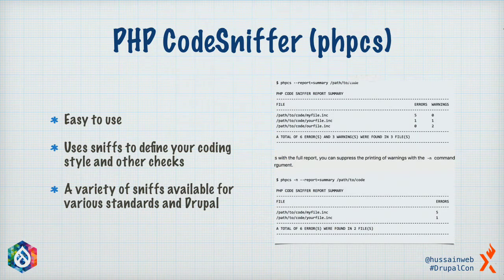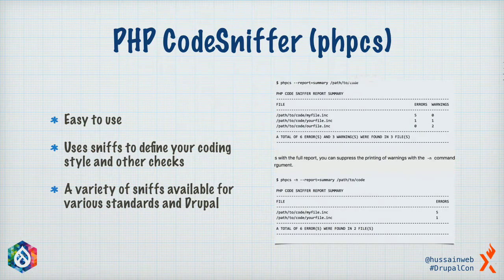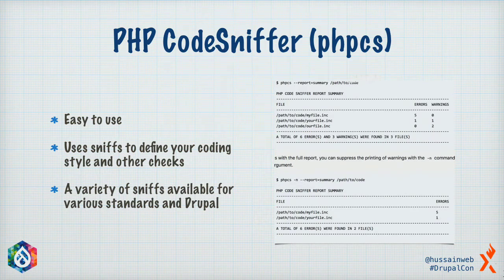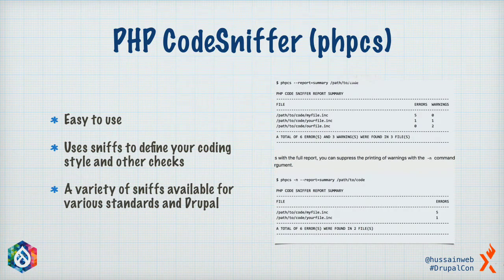PHP CodeSniffer uses something called sniffs, which are basically just a collection of rules. You define your code formatting guideline as a collection of rules, and as we'll see, it can catch many different kinds of errors. You can define all of these as sniffs. Typically you won't need to write a sniff yourself — there are a lot of sniffs available once you install PHP CS, like PSR2, PSR1, and Zen Framework. The Drupal sniff is available as part of the Coder module, and there are two more sniffs available as projects on drupal.org.